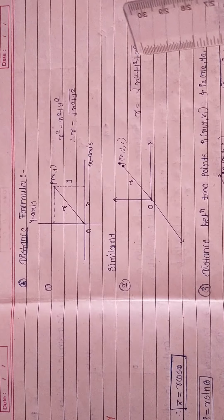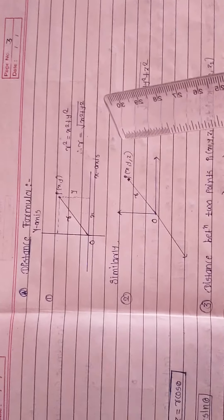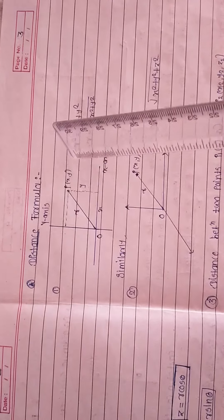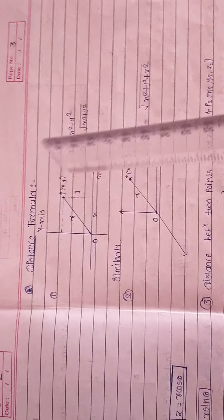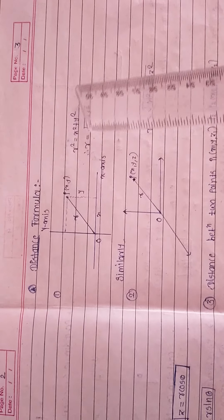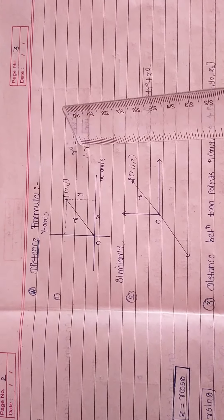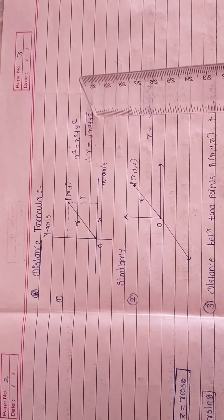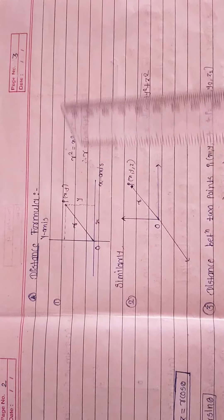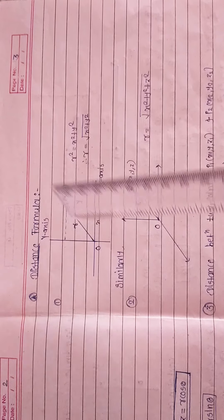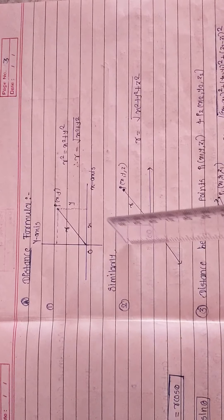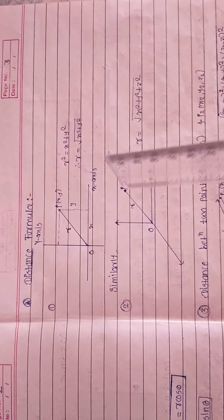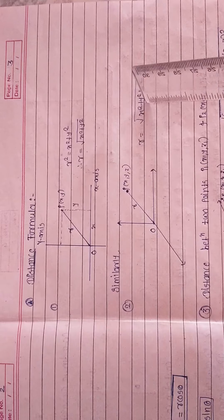Next we will study the distance formula, which comes from the Pythagorean theorem. Suppose we have a point P lying in the xy-plane and its distance from the origin is r. By the Pythagorean theorem, r² = x² + y², so r = √(x² + y²). That gives the distance of the point P from the origin. Similarly, in three dimensions with three axes x, y, z, the distance of point P from the origin is r = √(x² + y² + z²).